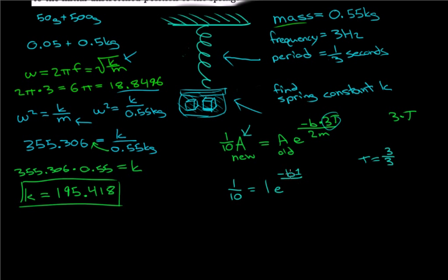Now, two times the mass. If our mass was 0.55 kilograms, then two times the mass is 1.1 kilograms. So we divide that by 1.1.